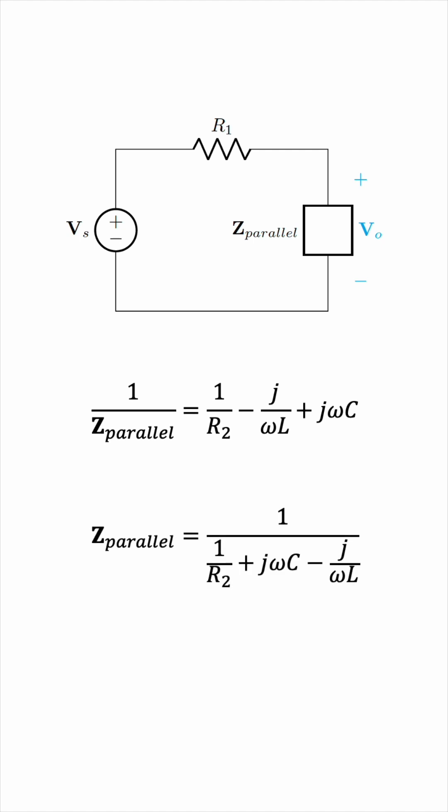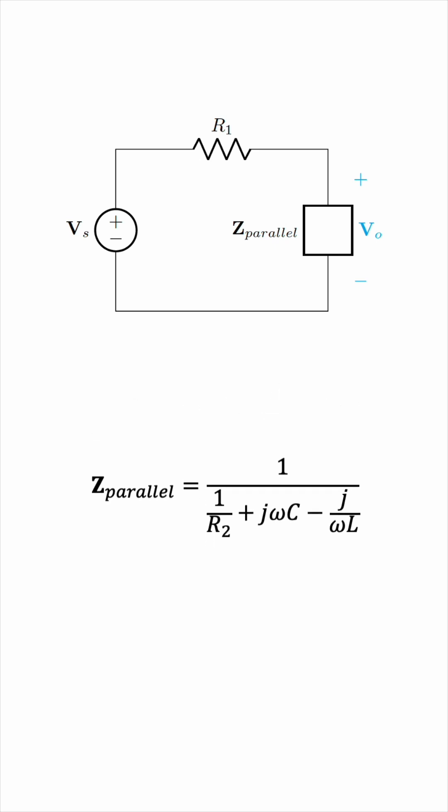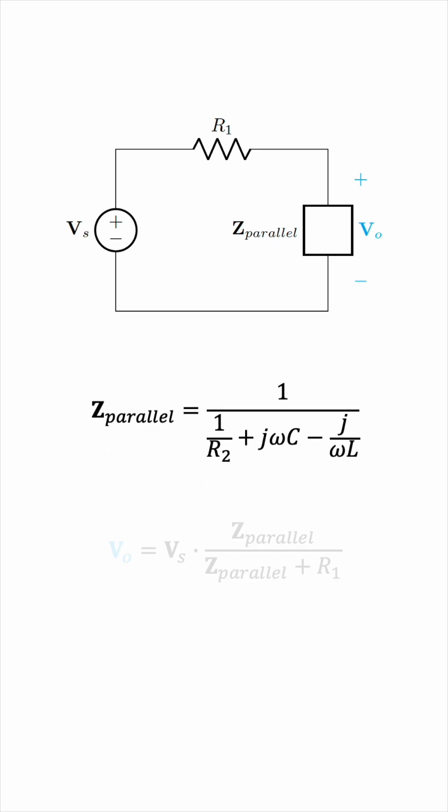What's next? Notice that this is a series circuit, so the output voltage VO can be found using a simple application of voltage division. VO will be Vs, the source voltage, times this parallel chunk, Z parallel, over the sum of the two impedance values, Z parallel plus R1.